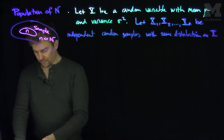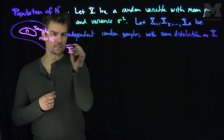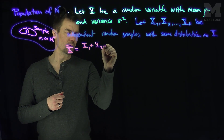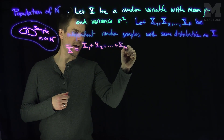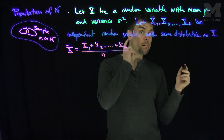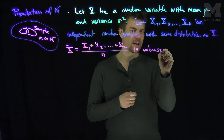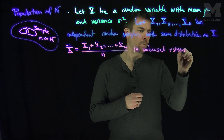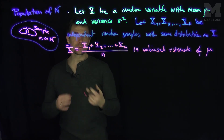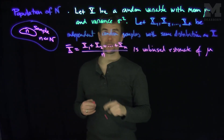From a previous video, we know that x-bar — which is (x1 + x2 + ... + xn) / n, the average of our sample random variables — is an unbiased estimate of μ. I'm going to use this x-bar to find an unbiased estimate, or a good estimate, of σ².